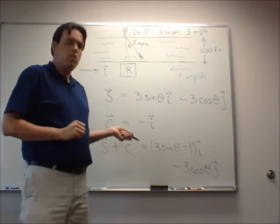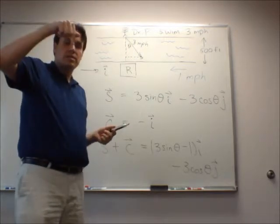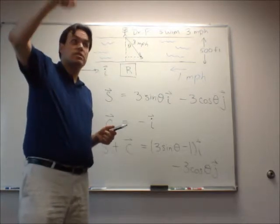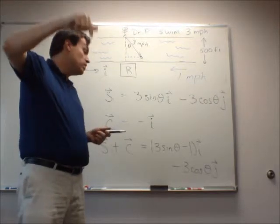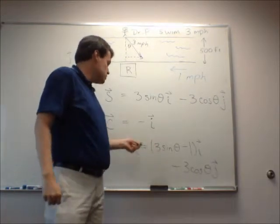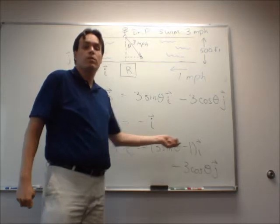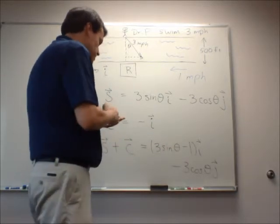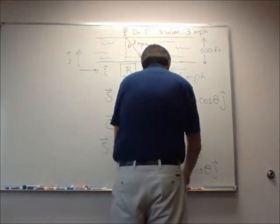And at this point, well, what do I want? I want to have some downward velocity, and I want to make sure that that velocity actually is purely downward at the end of the day, meaning that I want my resultant velocity to have no i component at all, which means I need this component, 3 sine theta minus 1,